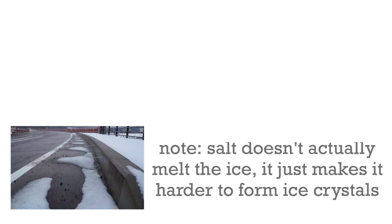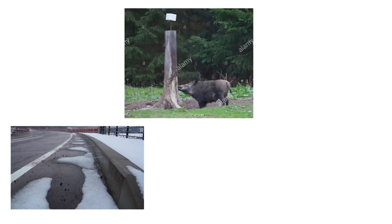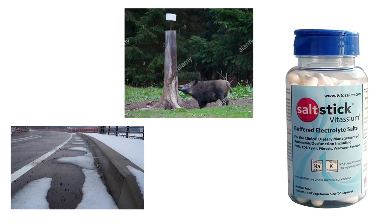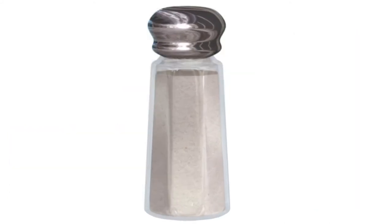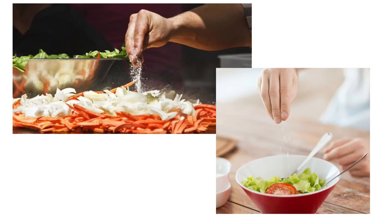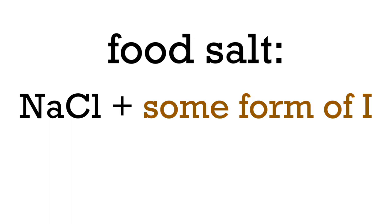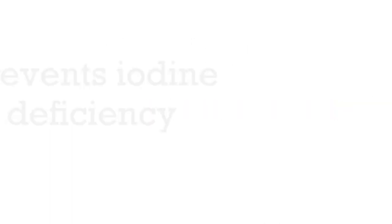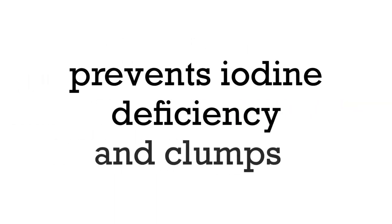Salt from halite is useful for melting snow and ice on roads, as salt licks for cattle since they also need salt, and for medicinal purposes. But we all know what it's most useful for — salt is a flavor enhancer used with food, whether in cooking or as a seasoning. The salt used for food is almost always iodized, having traces of iodine in it to prevent iodine deficiency and to keep the grains from sticking together.